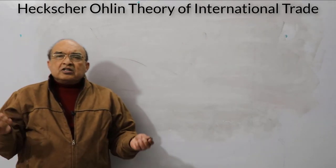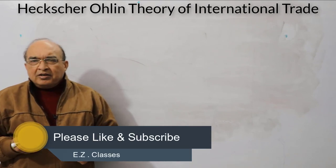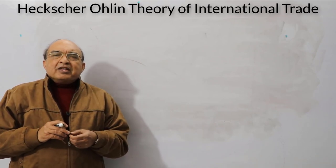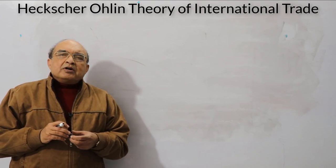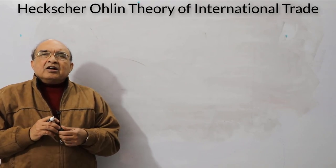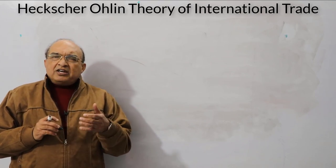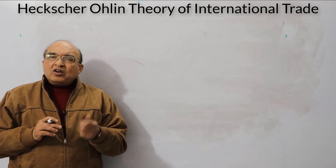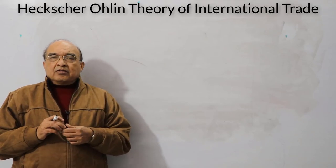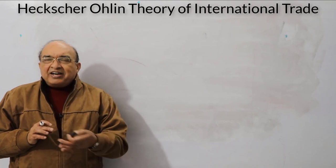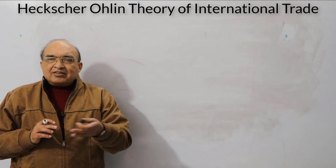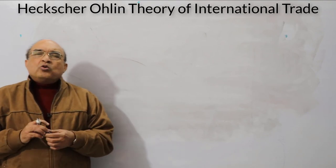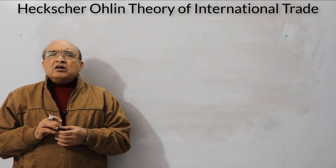This theory is called Heckscher-Ohlin theory because two economists, Heckscher and Bertel Olin, are credited with producing it. It was first published in a paper by Heckscher in 1919, but it did not receive the attention it deserved. It was 14 years later, in 1933, that Heckscher's student Olin refined and recast the theory, after which it became popular.